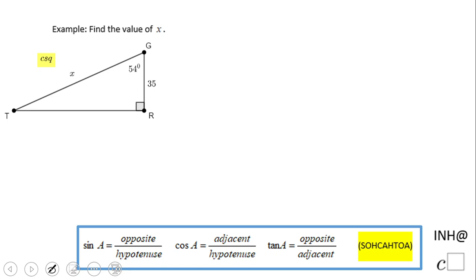Welcome back to I Need Help at C Squared. In this example, we look at a right triangle. Notice this is a right triangle with a 90 degree angle. In this triangle we know that one leg is 35, the angle is given as 54 degrees, and we need to find the hypotenuse.